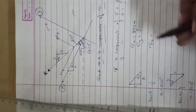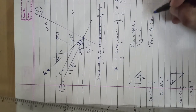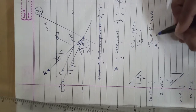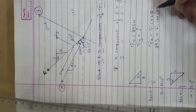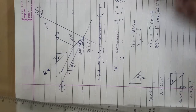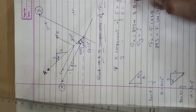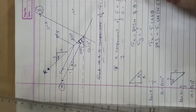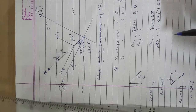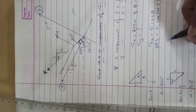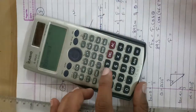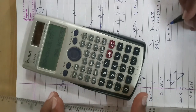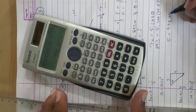Since theta is known — 26.57 degrees with respect to the X axis — Fx equals F cos theta. So Fx is 893 Newton. F is not directly known, but theta is 26.57 degrees. Therefore F equals 893 divided by cos 26.57, which gives F as approximately 998.45 Newton.